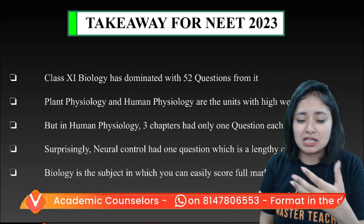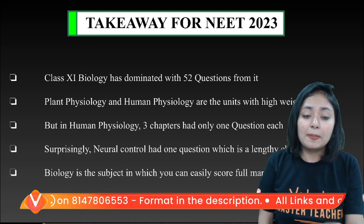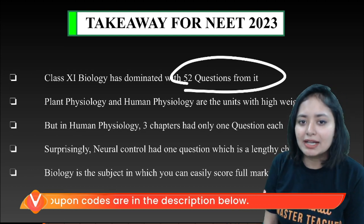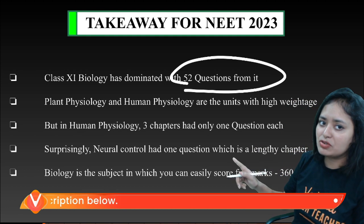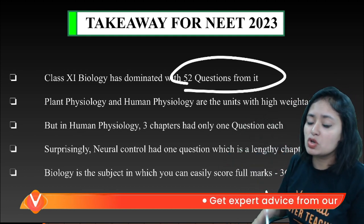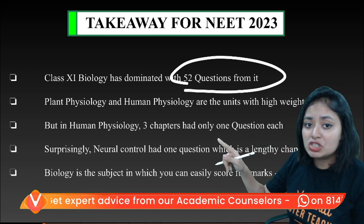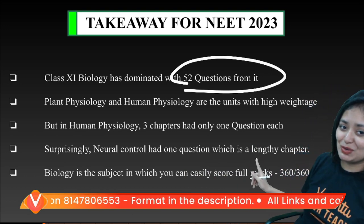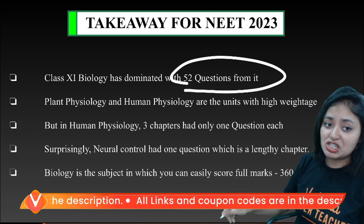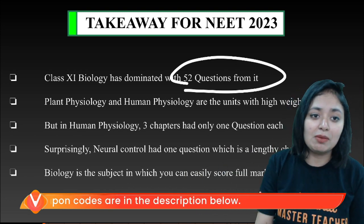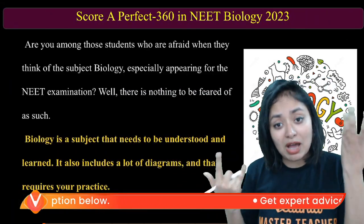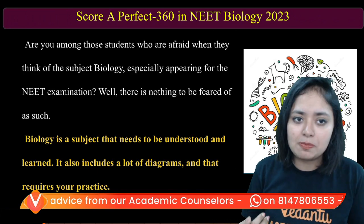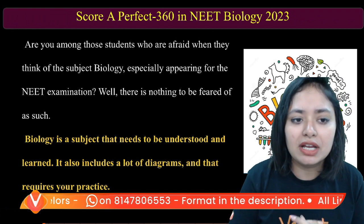Human physiology — when a question comes out of human physiology, you will have a question. Human physiology in three chapters, there are questions that come from one minute. High-weightage item, then we will serve. Neural control — there are questions that are emerging. That is a lengthy chapter, you can answer that question. Biology is a subject which you can easily score 360 on 360. If you have students already scoring 360 on 360 in bio, you will have interviews on YouTube — motivated, inspired.